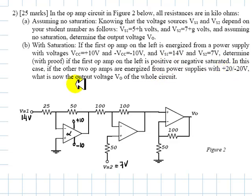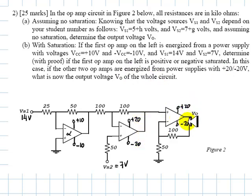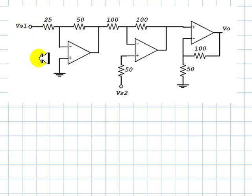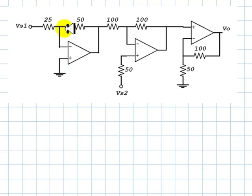In this case, if the other op-amps are energized from power supplies with plus 20 and negative 20, both of them, what is now the output voltage V0 of the whole circuit? Because these are three ideal op-amps and there is no feedback loop from V0 all the way to VS, this circuit can be analyzed isolated from the rest. If there were no saturation, this voltage would be equal to this one, would be 0 volts.